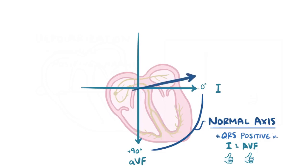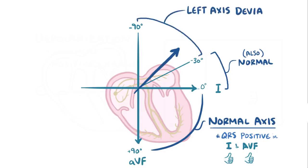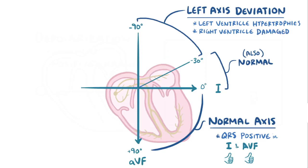If the vector is positive in lead 1 and negative in AVF, then it's in this quadrant, and it could also be normal if it's between 0 and negative 30 degrees. If it's between negative 30 and negative 90 degrees though, it could be considered left-axis deviation. Left-axis deviation can happen when the left ventricle hypertrophies, or when the right ventricle gets damaged and loses healthy tissue.